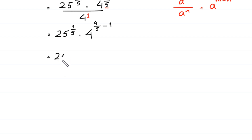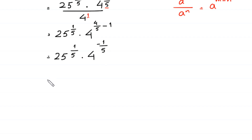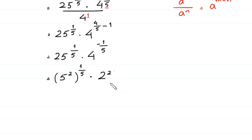This gives us the power negative 1 over 5. Next, we can write 25 as 5 squared, whole to the power 1 over 5, times we can write 4 as 2 squared, whole to the power negative 1 over 5.